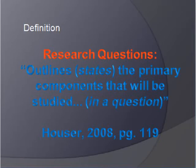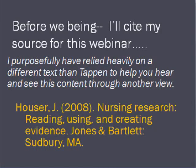A research question states the primary components — meaning variables and setting — that will be studied, putting them in a question form. You're probably wondering: what's a hypothesis versus a research question? We'll definitely get to that. I'm relying heavily on Hauser because I wanted to give you another view of these concepts than Tappan. I love both of these texts, so please rely on them heavily yourselves.